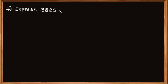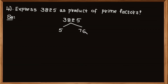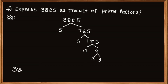Problem number 4: Express 3825 as a product of prime factors. In this problem we have to factorize 3825 as a product of prime factors. First, 3825 can be written as product of 5 and 765. Again 765 can be written as product of 5 and 153. Again 153 can be written as product of 17 and 9. And finally 9 can be written as product of 3 and 3.